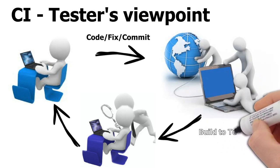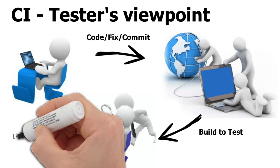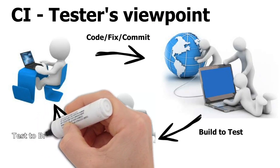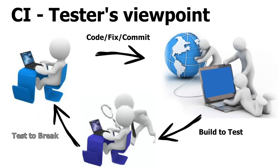So for every code which is committed, automation tests are run and then the build is created. The build is ready and it is forwarded to the Taster. They test it and once they find issues, it is sent back to the developer to fix. This process keeps repeating in a continuous fashion — and that's why it is known as Continuous Integration.